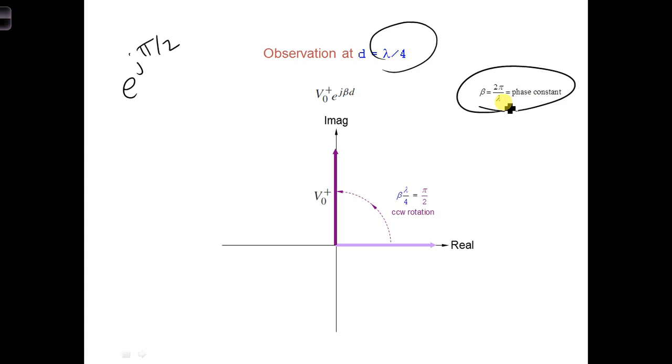This means the voltage phasor has rotated about the complex plane by an angle of pi over 2 between the load and a distance d equals lambda over 4 from the load. As you move away from the load, it starts to rotate around until we get lambda over 4 away from the load, and now it's pointing straight up.